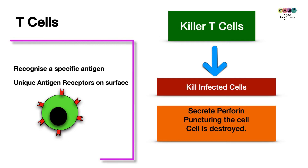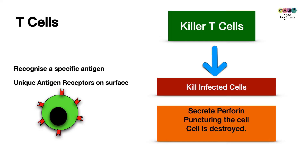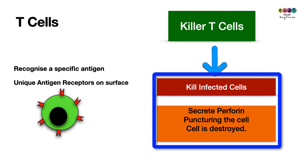Killer T cells also have a uniquely shaped antigen receptor on their surface — there are many types, each differing by their specific antigen receptor. Their role is to kill infected cells. If one of your cells gets infected or turns cancerous, the killer T cell will attack and kill it, because those cells present a foreign antigen on their surface. When killer T cells are fully activated by helper T cells, they secrete a chemical called perforin, which punctures and destroys the cell.